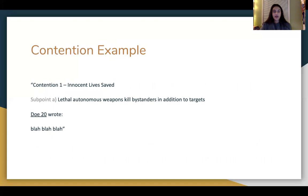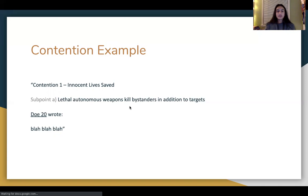As a contention example: contention one — 'Innocent Lives Saved.' That's the contention title. The tagline would be: 'lethal autonomous weapons kill civilians in addition to targets.' That title can be a phrase, while the tagline is a more fully developed sentence — short and sweet but a good summary point. Then comes the warrant — the sourced card — with everything the evidence says. After that, you give a clear link and impact as to why your evidence matters.